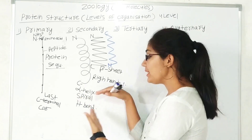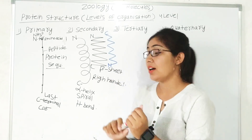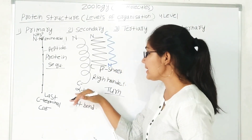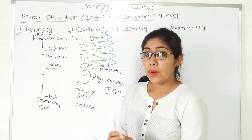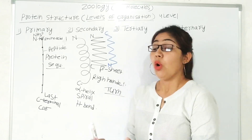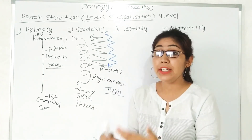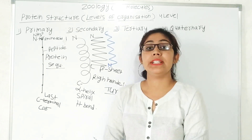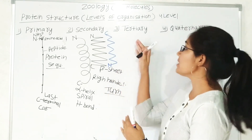Other secondary structures also exist, such as turn-like structures, also known simply as turns. So the secondary structures are: alpha helix (most common), beta sheet, and turns. Now, how is the tertiary structure formed? When the alpha helix and beta sheet further fold on themselves and form a three-dimensional domain-like structure, that is known as the tertiary structure of a protein.